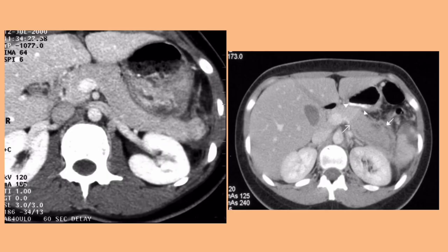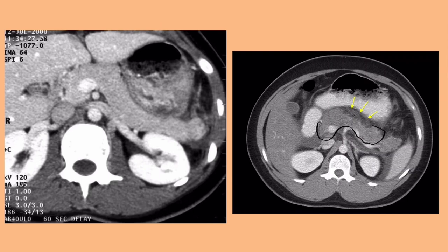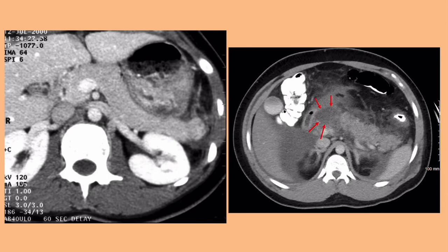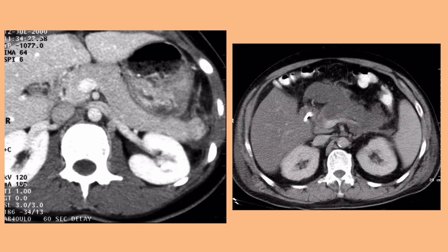On CT imaging, the normal pancreas should be clearly delineated and easy to pick out. In the early stages of acute pancreatitis, edema develops, making it harder to identify the pancreas, and you'll see some fluid. As it progresses, you lose the clear outline — red arrows indicate fat stranding and fluid around the pancreas, and in more severe cases, necrosis of the pancreatic parenchyma.